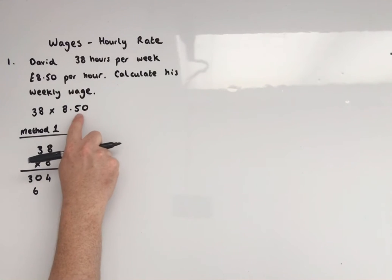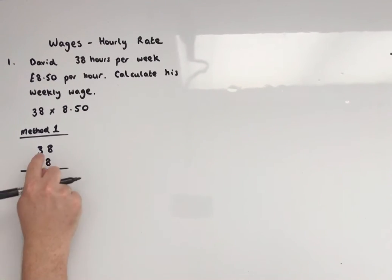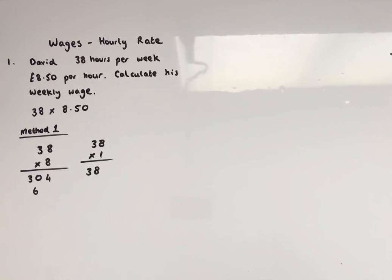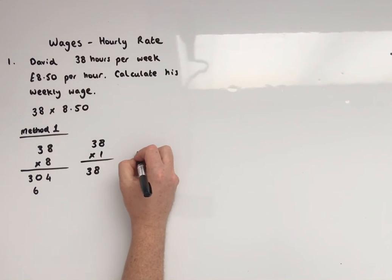Okay, we've still got 50 pence. 50 pence, 38, 50 pences. Okay, if it was £38, then it would be £38. So we want half of that. Okay, so half of 38.